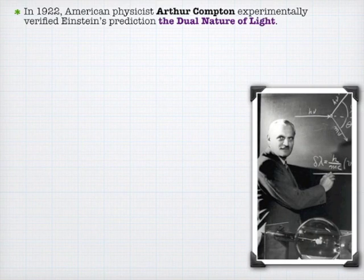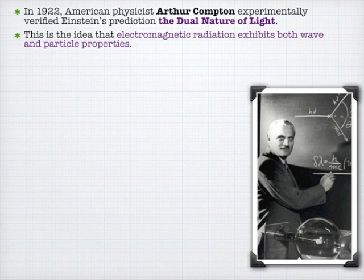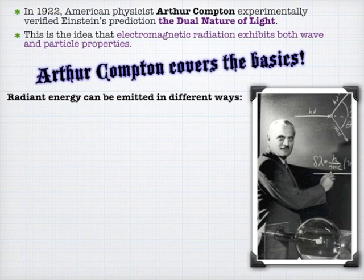The dual nature of light was verified by an American, Arthur Compton. He was studying what's called the Compton effect, where he found that if you hit a photon with something like an electron, it came out of that collision with less energy. To explain this, you couldn't say that light was a wave — light had to have particle properties. That experimentally verified Einstein's idea that energy could act like a wave or a particle, and does both at the same time, depending on how you test it.